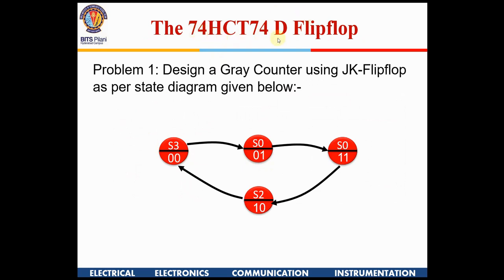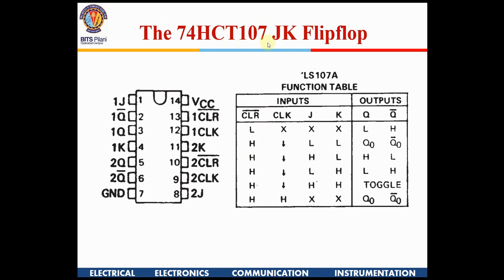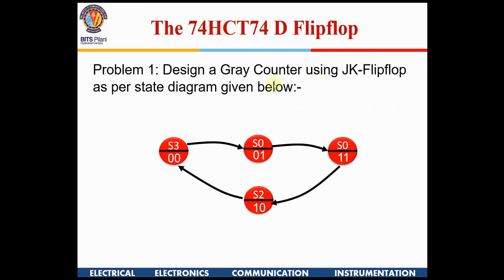Please amend the label shown — this should read 74107, not as printed. Using the 74107 JK flip-flop, you are going to design a Gray counter. The sequence is 00, 01, 11, 10, 00. You need to make a state table and use the JK flip-flop to realize this counter.